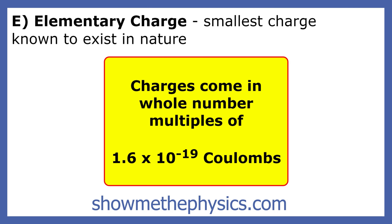The smallest charge known to exist in nature is called the elementary charge. It is the charge on the electron and proton. This charge is 1.6 times 10 to the negative 19th coulombs. All charges in nature are a whole number multiple of this charge.